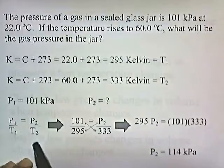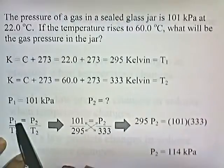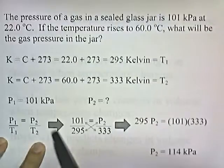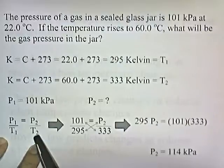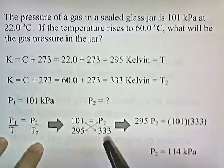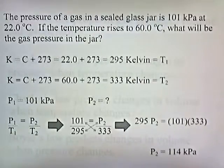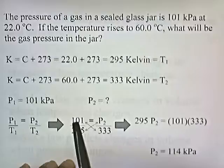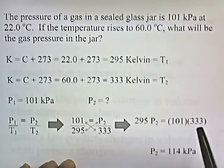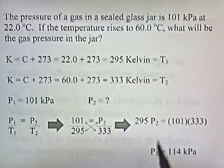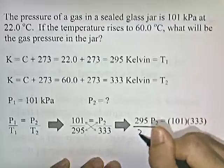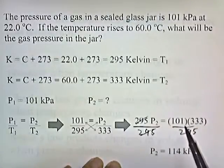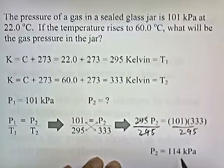Here's the formula for Gay-Lussac's Law: P1 over T1 equals P2 over T2. P1 is 101, T1 is 295, P2 is what we're going to solve for, and T2 is 333. To solve for P2, we cross multiply: 295 times P2 equals 101 times 333. Then divide both sides by 295, so the 295s cancel. P2 equals 101 times 333 divided by 295, which gives us 114 kilopascals.